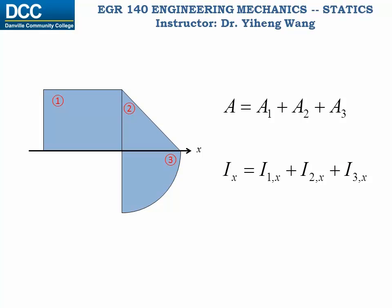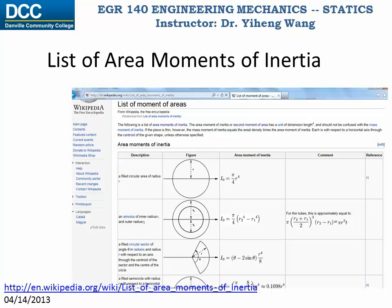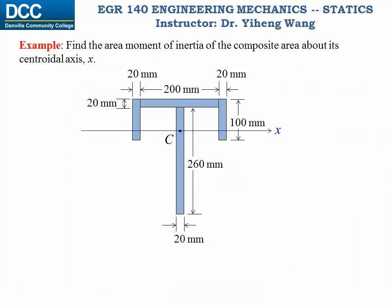For that we need to find the moment of inertia of each component shape about its own centroidal axis. As I said before, this information is common and can be found either online or from your engineering textbook or handbooks. So let's look at this example. We need to find the moment of inertia of this composite area about the centroidal axis of the composite area.